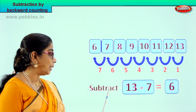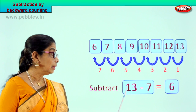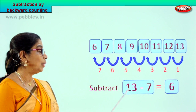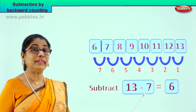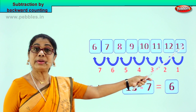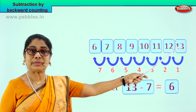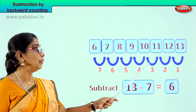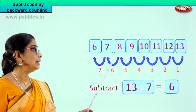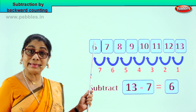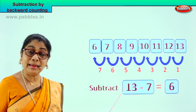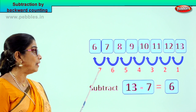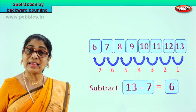Good. 13 minus 7 is equal to 6. Check it out again. You have 13 here and you are supposed to take away 7. From 13 you count 7 steps backward: 1, 2, 3, 4, 5, 6, 7 steps backward and you get answer 6. So 13 minus 7 is equal to 6. You counted 7 steps backward.